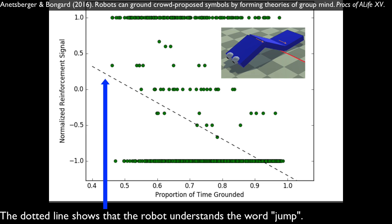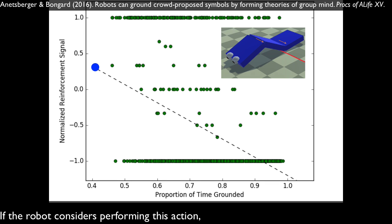The dotted line shows that the robot understands the word jump. If the robot considers performing this action, it knows it will spend little time on the ground, and that the crowd is likely to reward it.